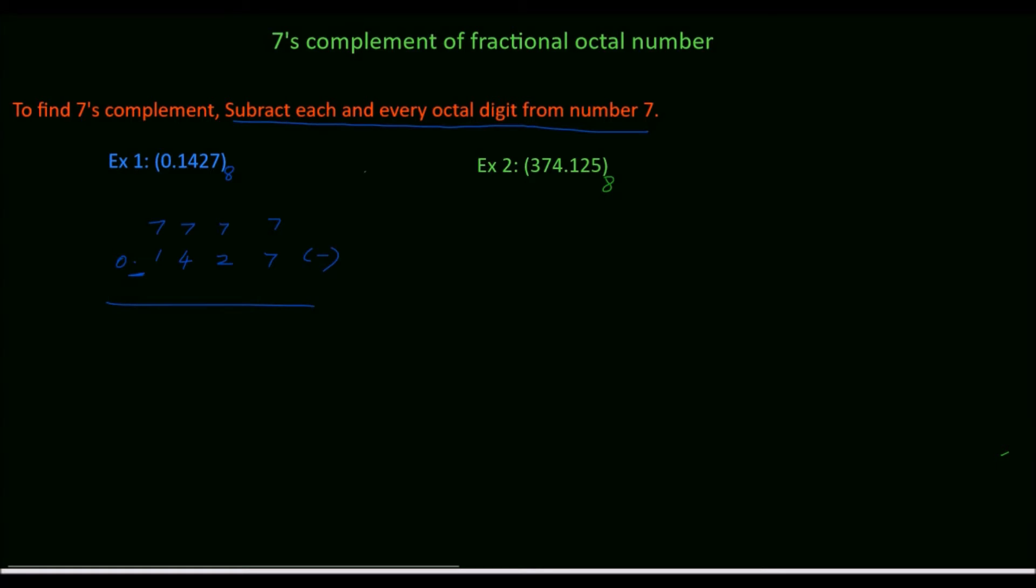Subtract this. 7 minus 1 is 6. 7 minus 4 is 3. 7 minus 2 is 5. 7 minus 7 is 0. Point.